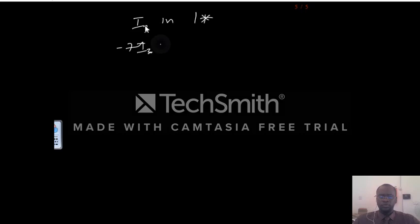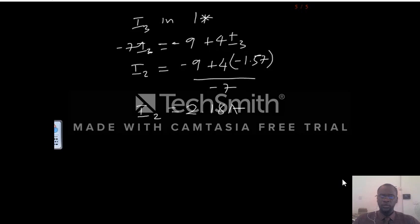And then by substituting for I3, since I3 has been found, by substituting in equation 1, we get the result for I3. We get the result for I2, the value of I2. Therefore I2 is 2.18 ampere.